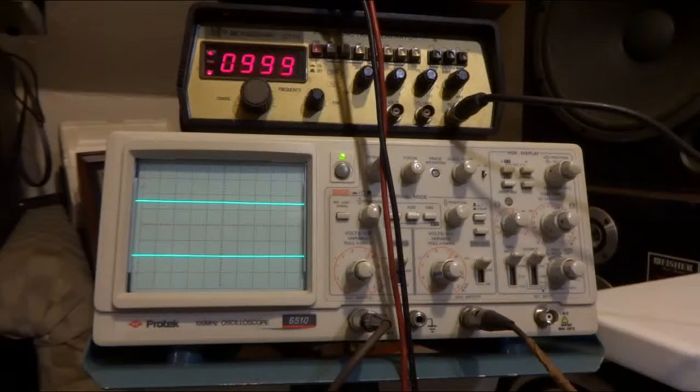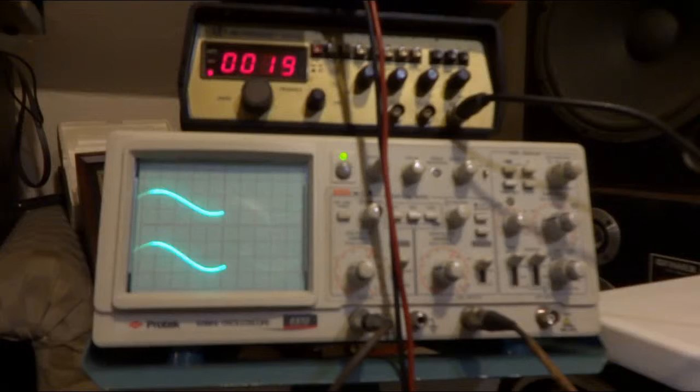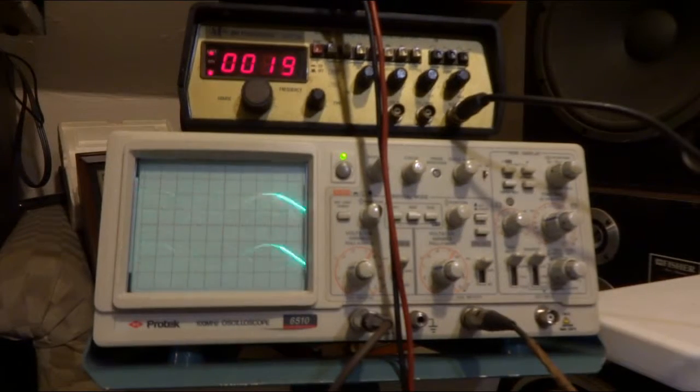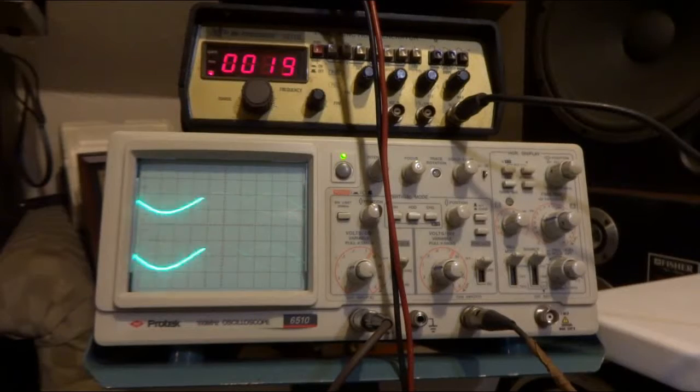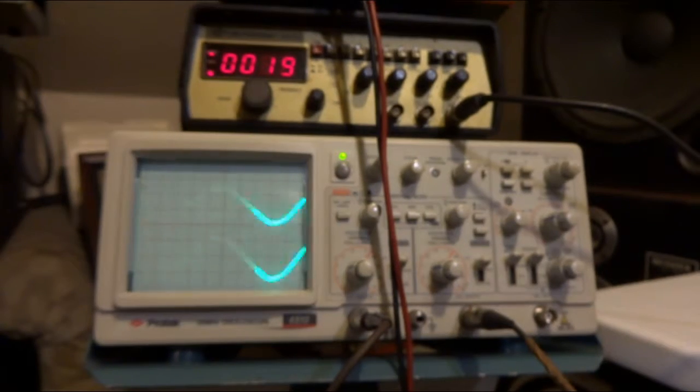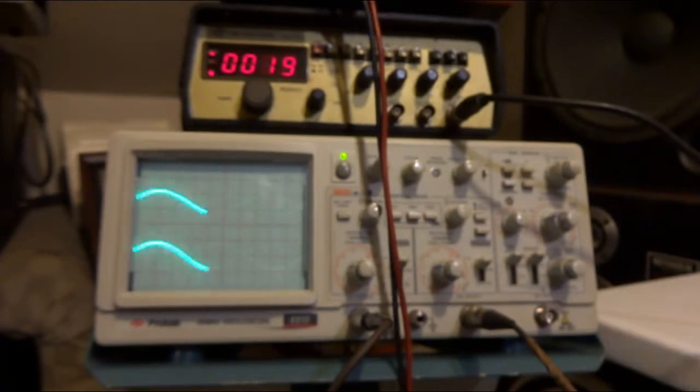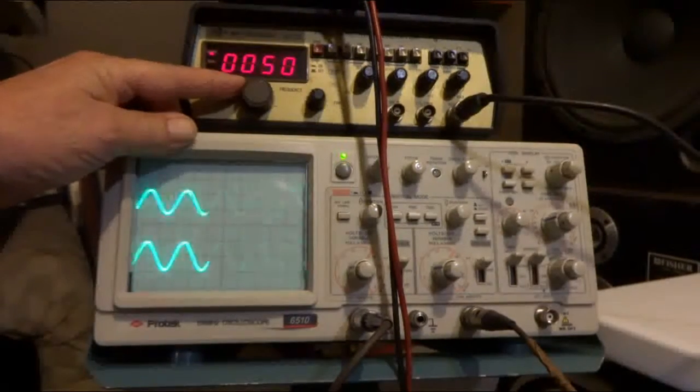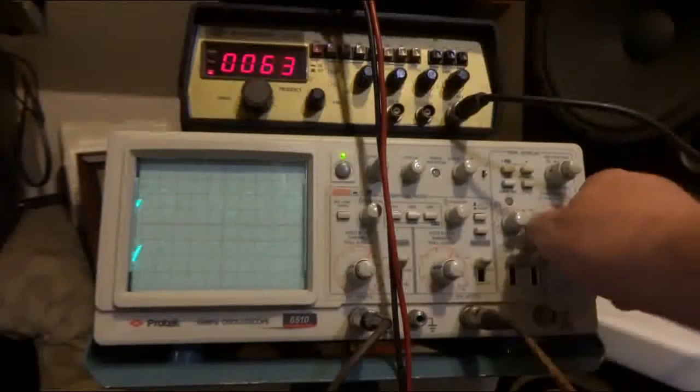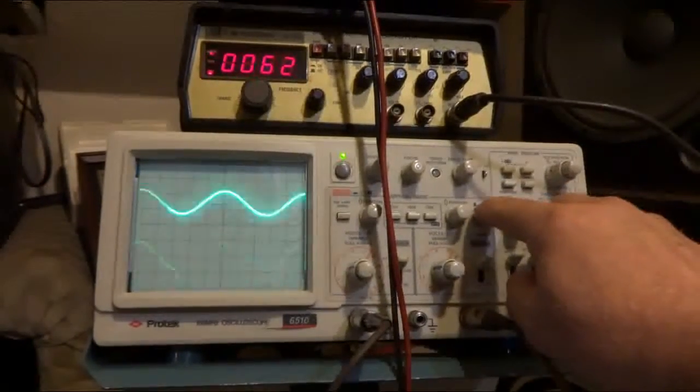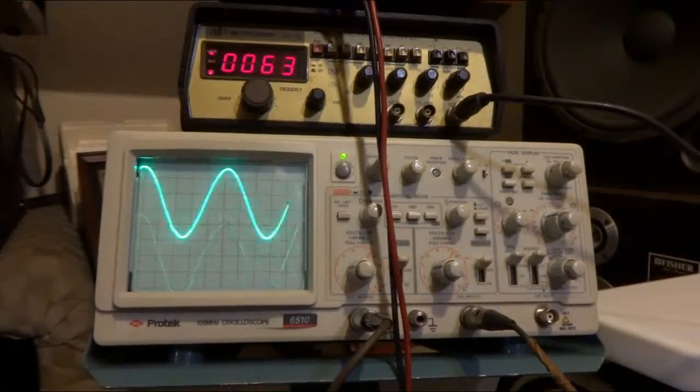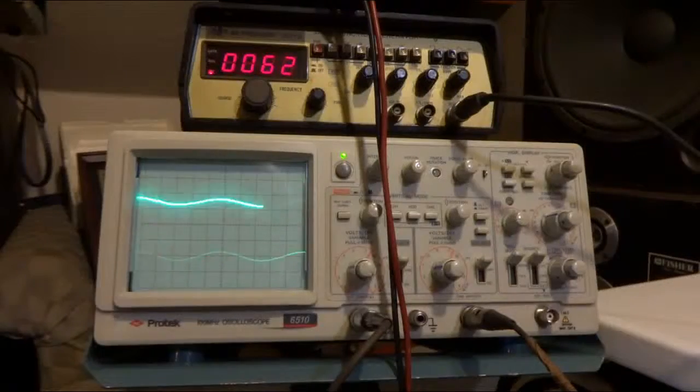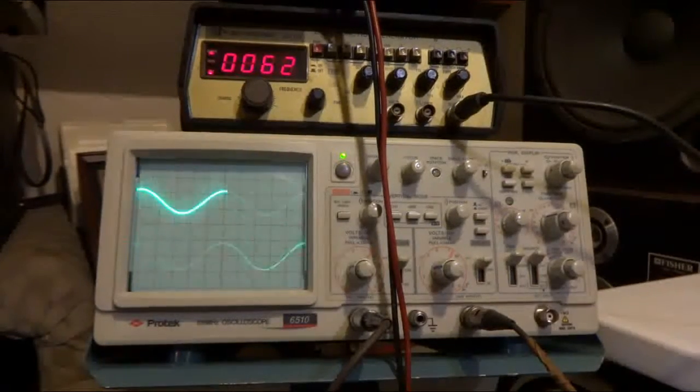Now I got my function generator set at 20 Hertz and we'll see what the bass does here. Bass turned up all the way, bass turned down all the way. Let's go up to about 60 Hertz. From 20 to 60 Hertz, it's sub-bass. Turn the bass all the way up, bass all the way down. Treble has no effects in this range.